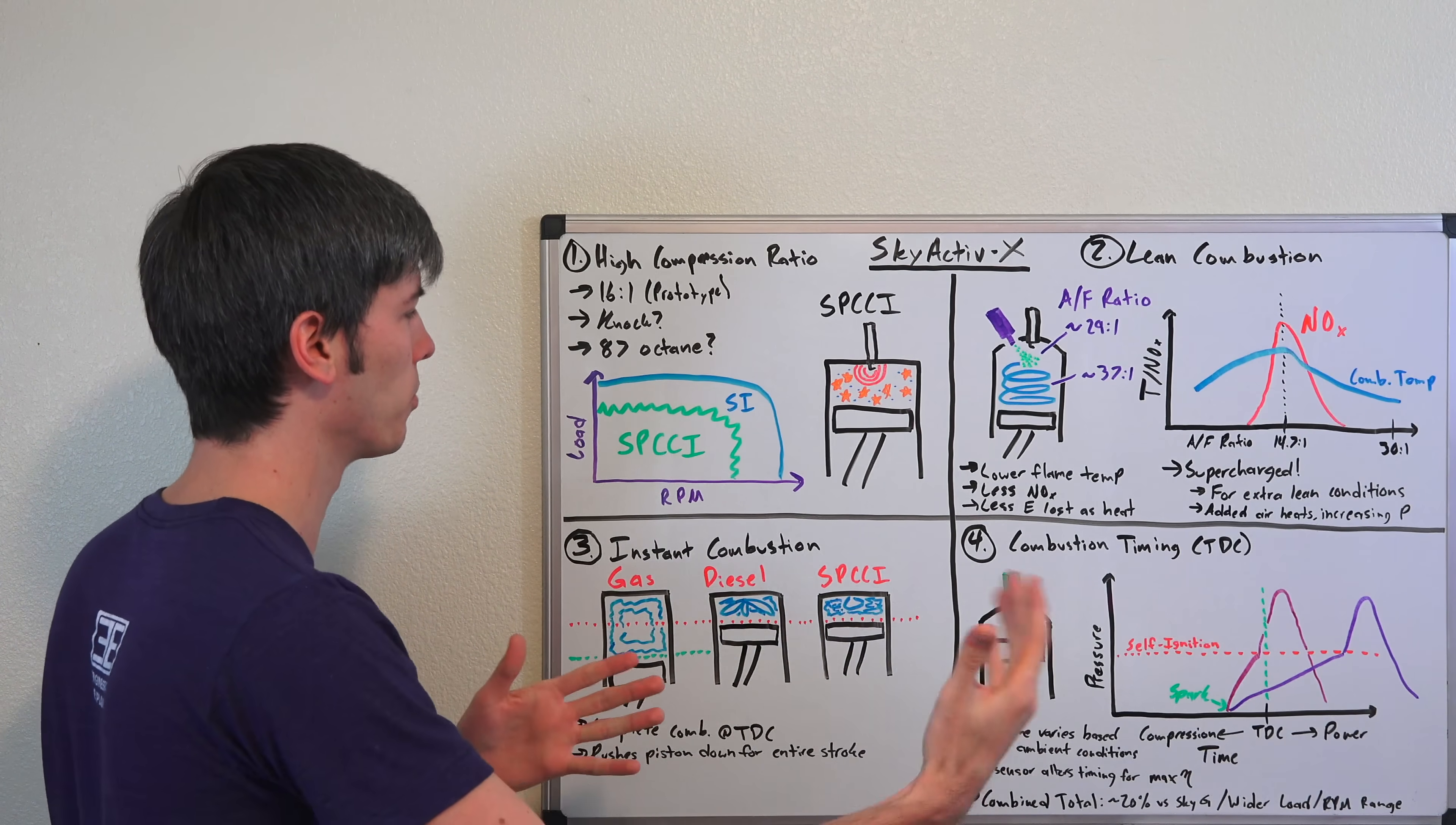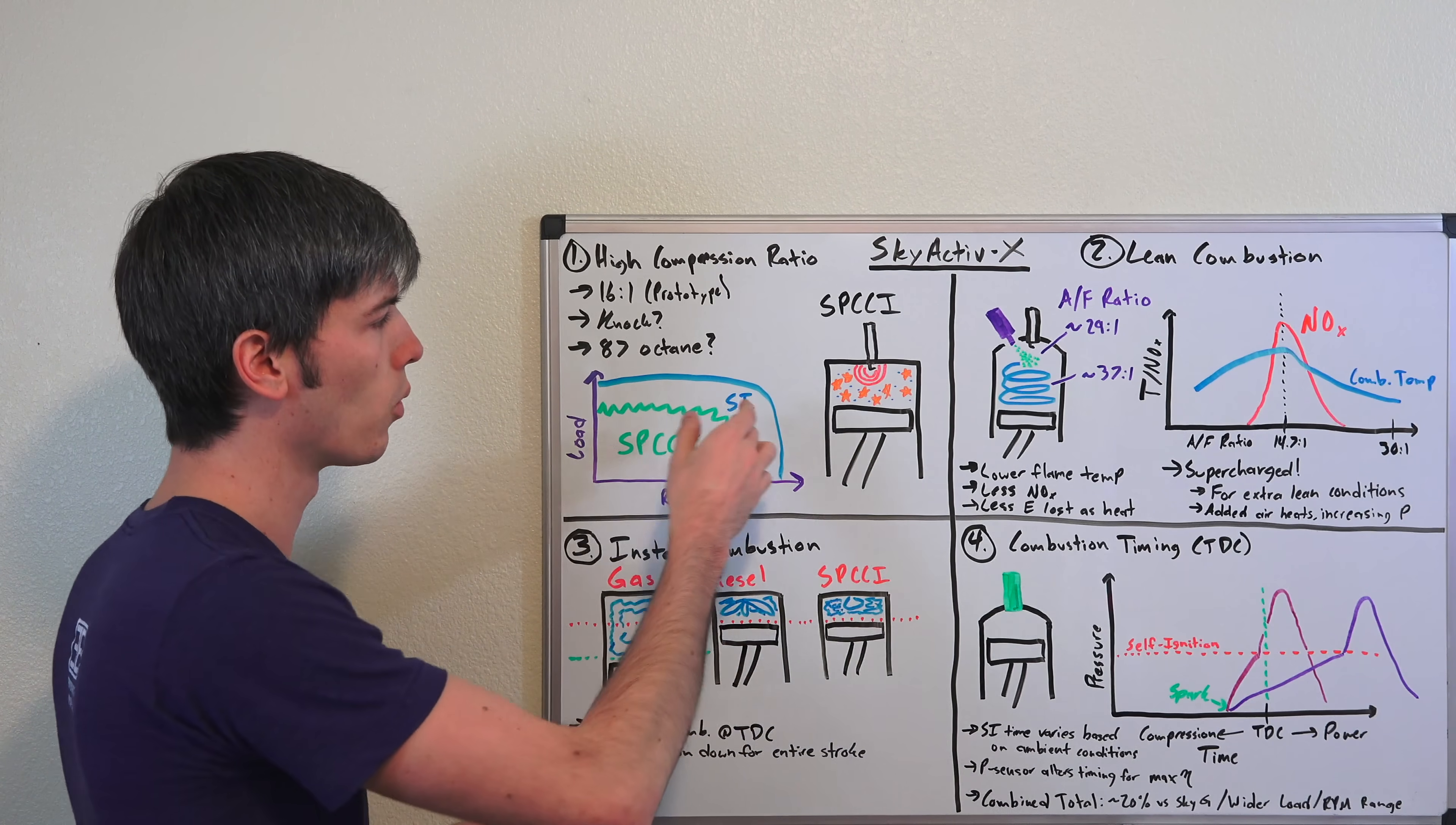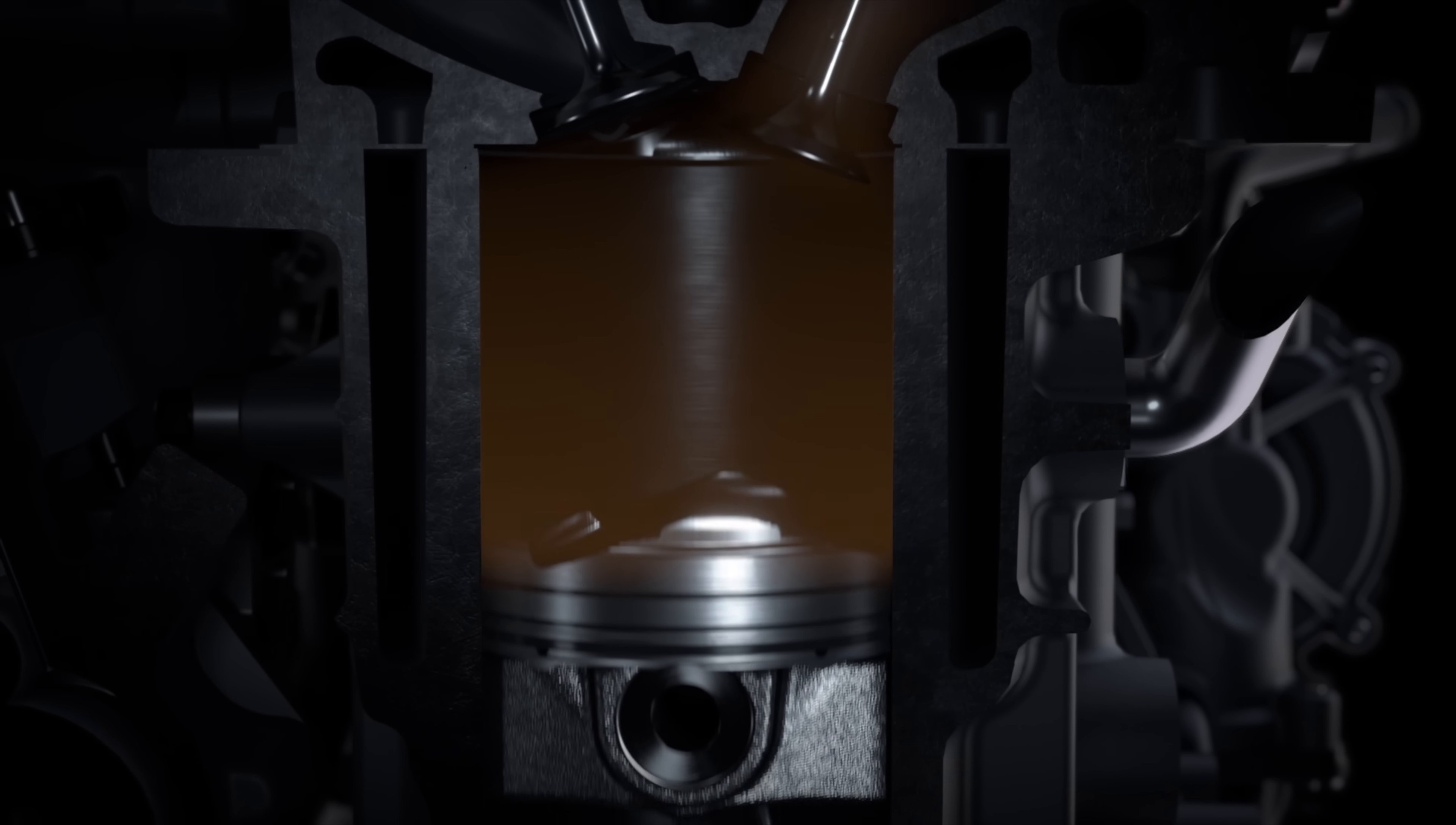You cannot always run it in this mode. In ideal conditions you want to run it with spark-controlled compression ignition because the efficiency is greater. If you look at a graph of load versus RPM, there's a faded area where it switches from spark-controlled compression ignition to a regular spark ignition engine. It'll be running an Atkinson cycle when it's running on spark ignition, operating like a traditional gasoline engine. The important thing to keep in mind is that it's always using a spark to control when compression occurs, to properly time when that ignition occurs.